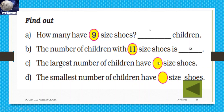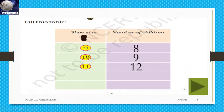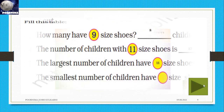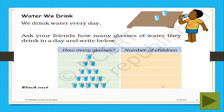The smallest number of children have a dash size shoes. Let's see — eight. Size nine has eight students; it is the smallest number. Therefore, size nine.